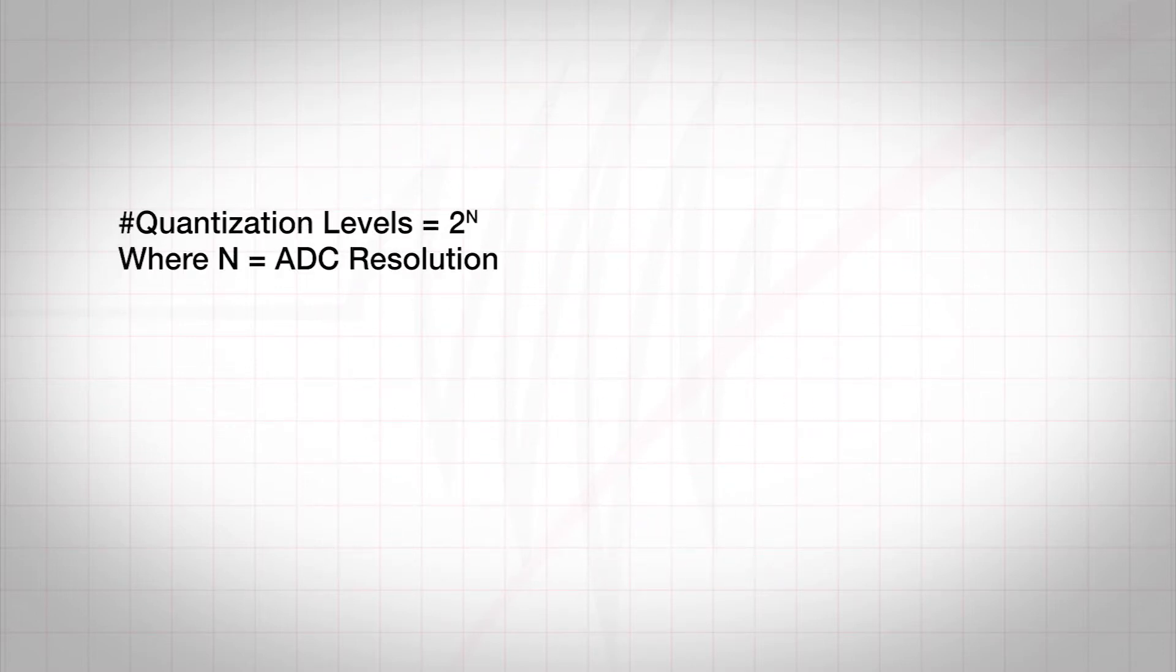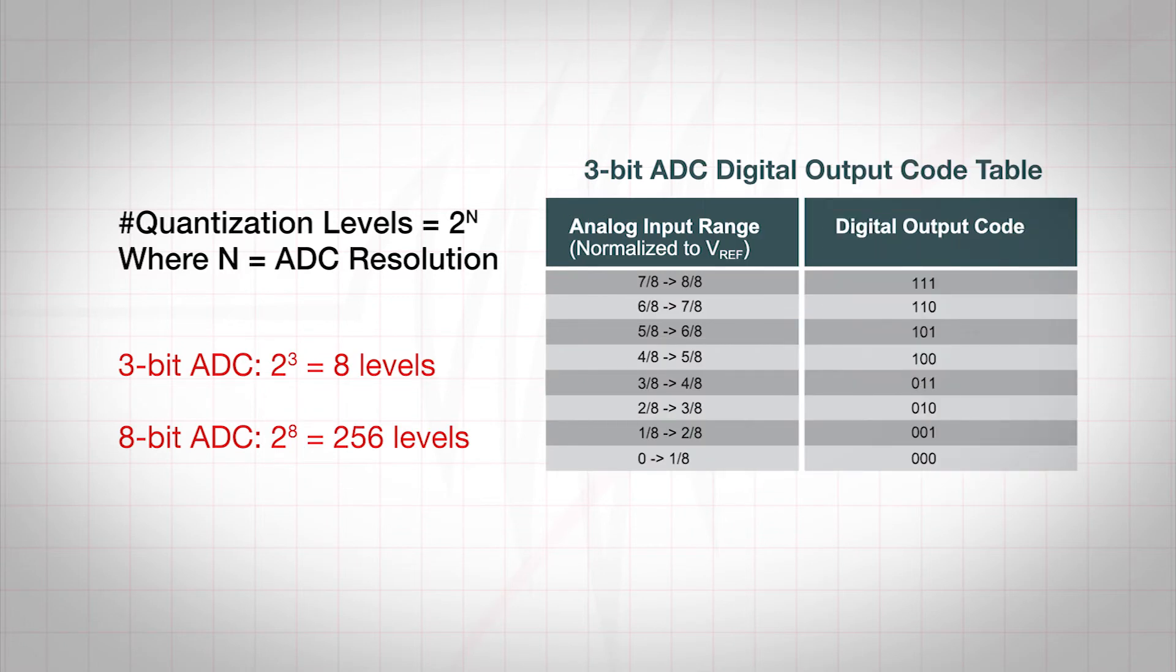Since ADCs use a binary code, the number of levels an ADC can encode to is 2 to the nth power. For example, a 3-bit ADC will provide 8 levels and an 8-bit ADC will provide 256 levels.